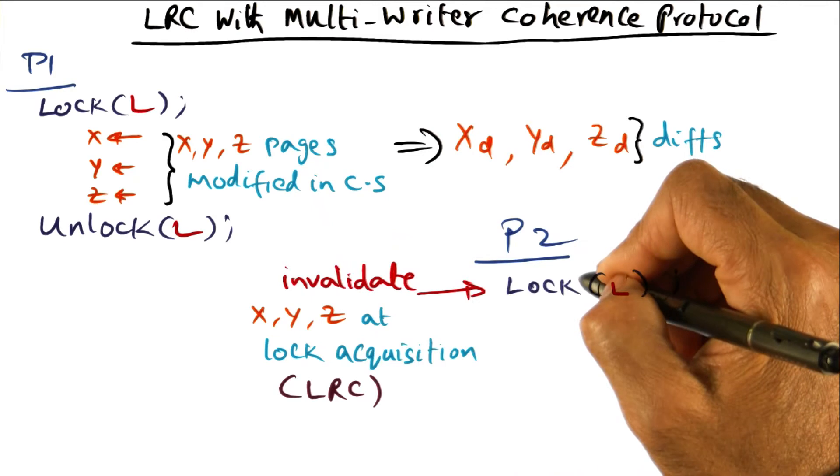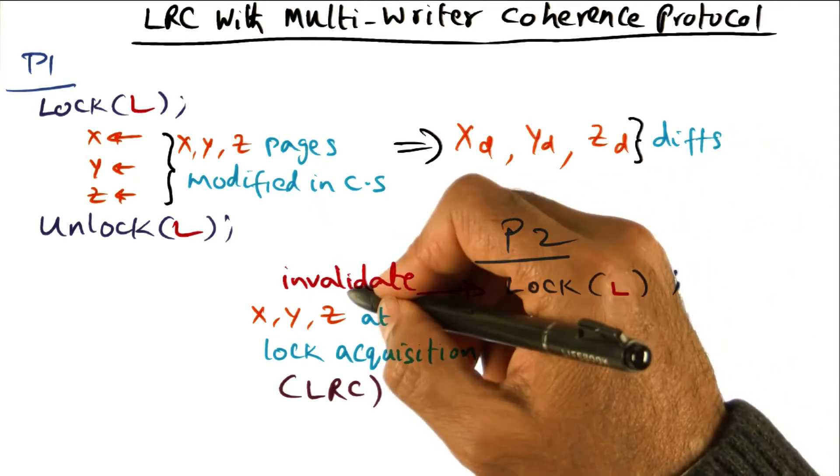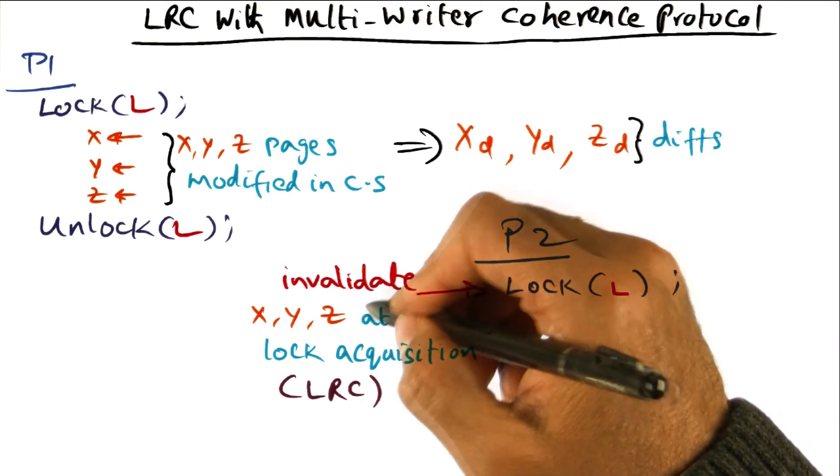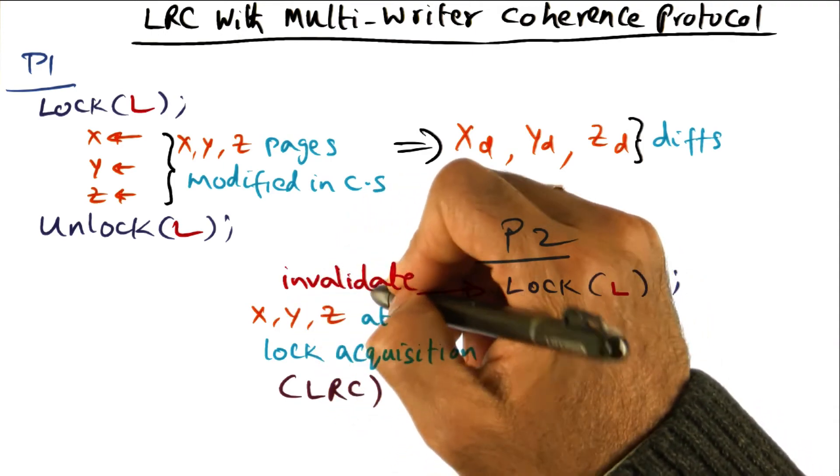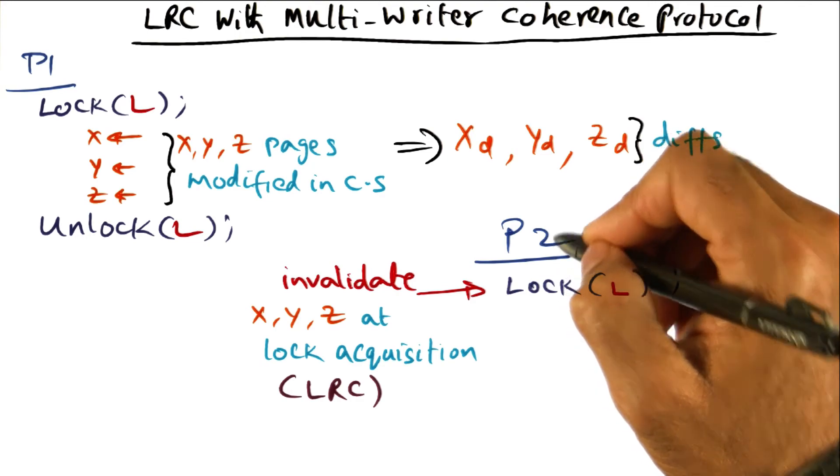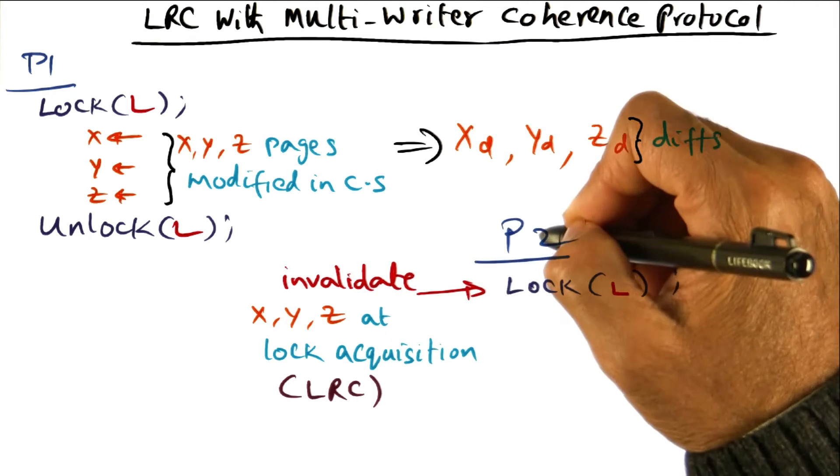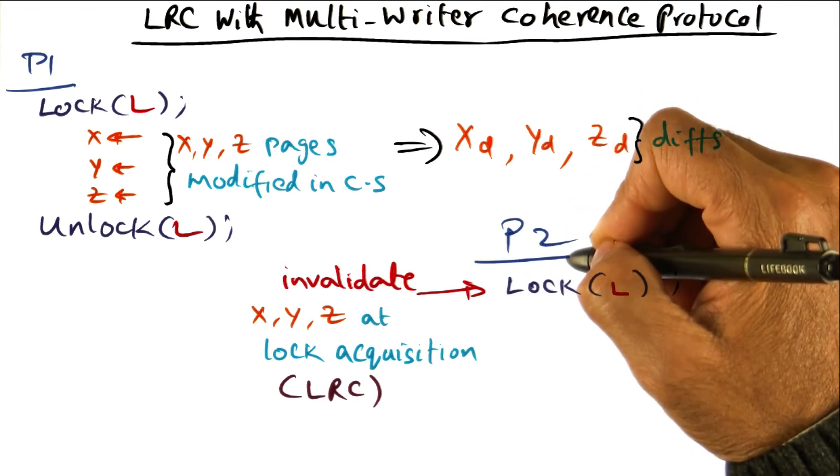Therefore, when P2 makes this lock request L, the DSM is going to first invalidate—if copies of pages X, Y, and Z are locally resident in processor P2, then the DSM software is going to invalidate those pages X, Y, and Z at the point of lock acquisition.